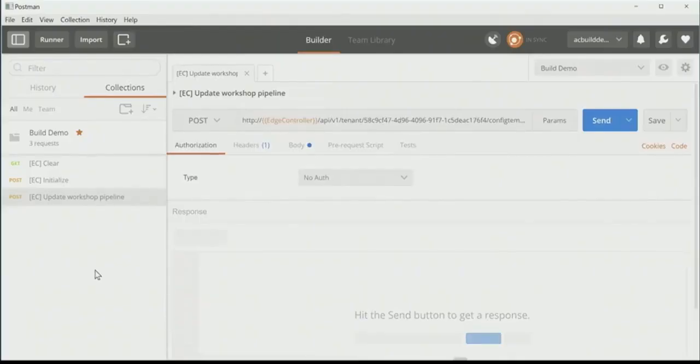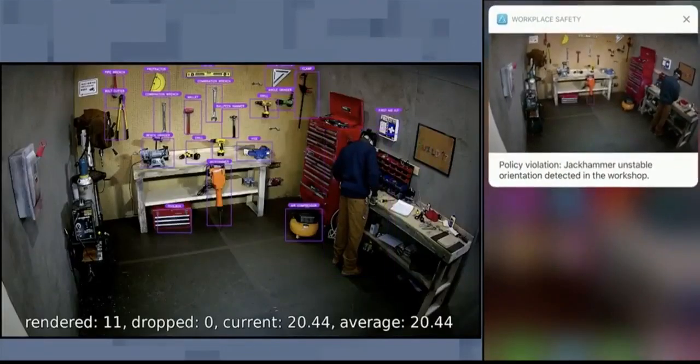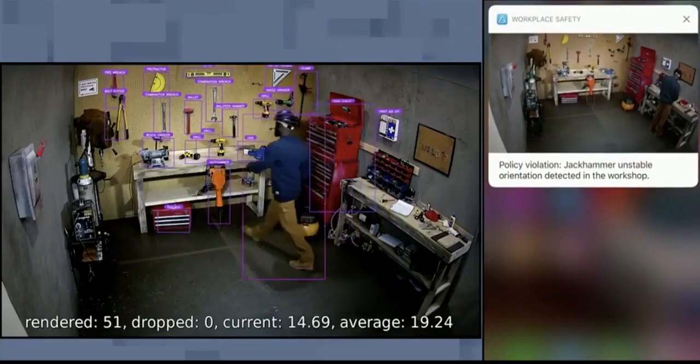And so I've already gone ahead and I've tagged that jackhammer in a variety of safe and unsafe positions in the system. And so when I update this pipeline, which I'm going to do right now, it's not only going to see the jackhammer now, but it is also going to tell me it's in an unstable orientation. And it's going to notify Ayuba so he's able to very quickly resolve the issue.